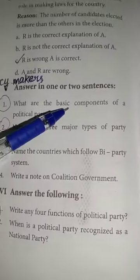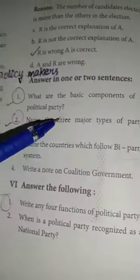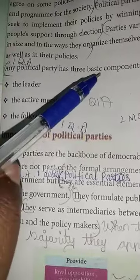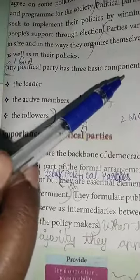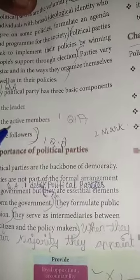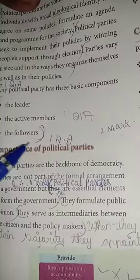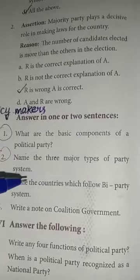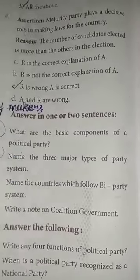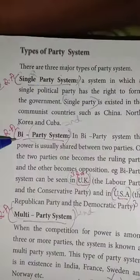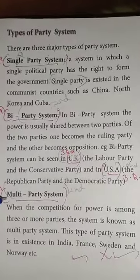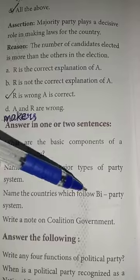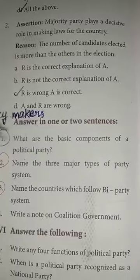What are the basic components of a political party? Any political party has three basic components: the leader, the active members, and the followers. Name the three major types of party system: single-party system, biparty system, and multiparty system. Name the countries which follow biparty system: UK and USA.